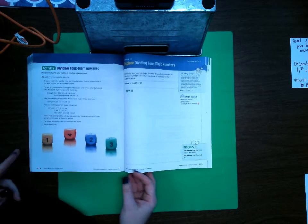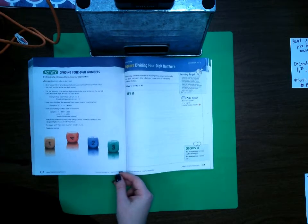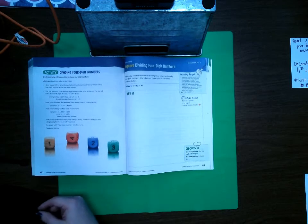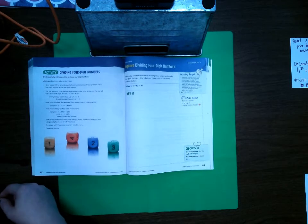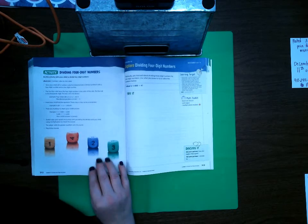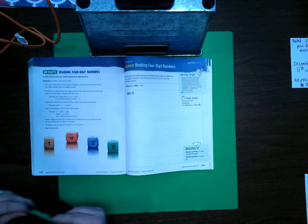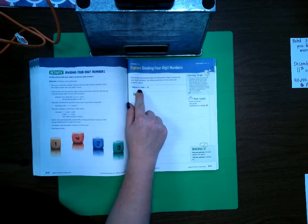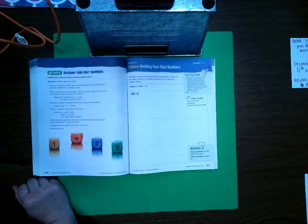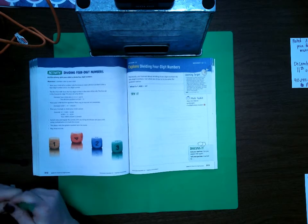If you will go ahead and turn to page 313 in your math book, this is where we are going to start our session one. Alright, page 313, dividing four-digit numbers. Our first problem here is 1400 divided by four. We are going to do our problems for four-digit numbers just like we did our problems for three-digit numbers, it's just one extra digit.